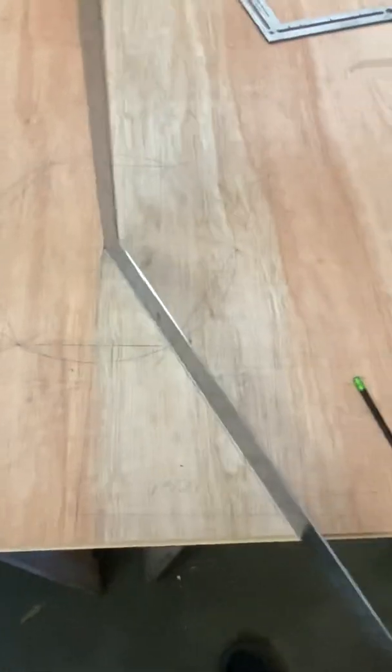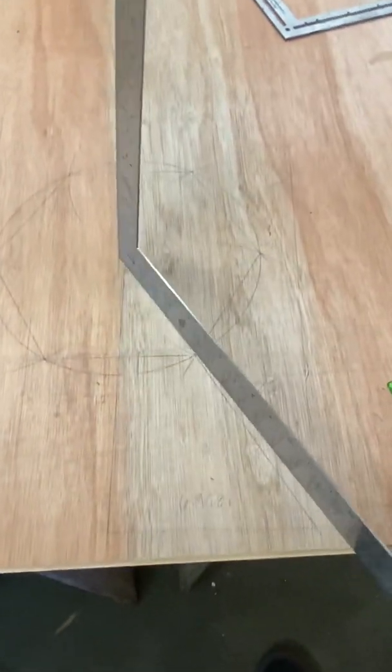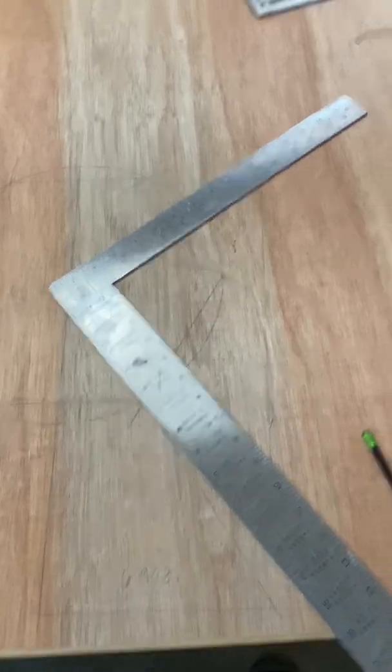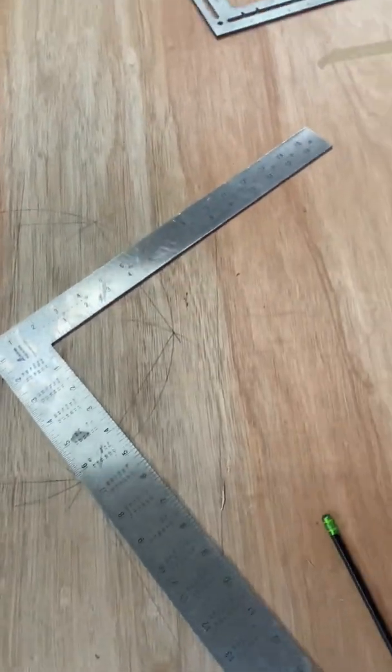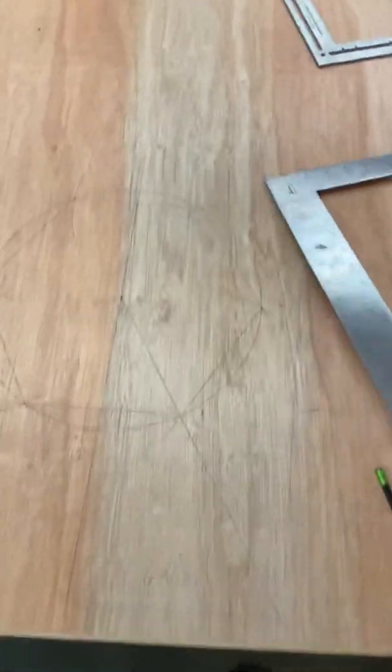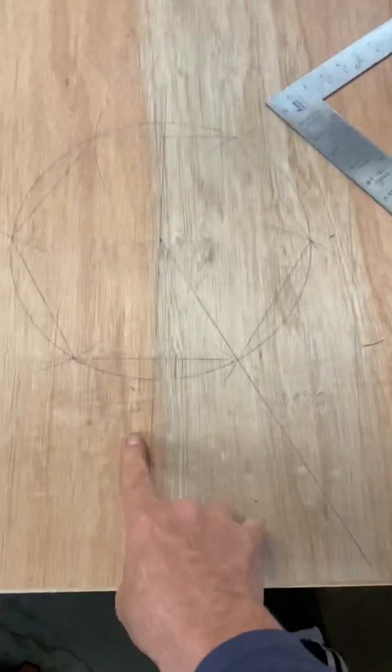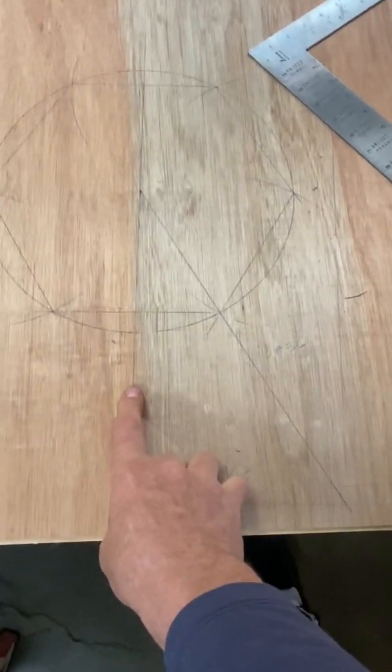Since we know that it rises nine, I could swing this over here, lay it down flat, mark nine, draw a line from nine and measure this hypotenuse and that would be the hypotenuse of the hip for every 12 inches that the common rafter ran on the level.